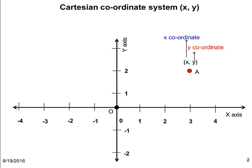The x-coordinate indicates the distance of the point from the y-axis and the y-coordinate indicates its distance from the x-axis. The Cartesian coordinates of point A in this example are (3, 2). Similarly, we can identify the coordinates of point B and point C.